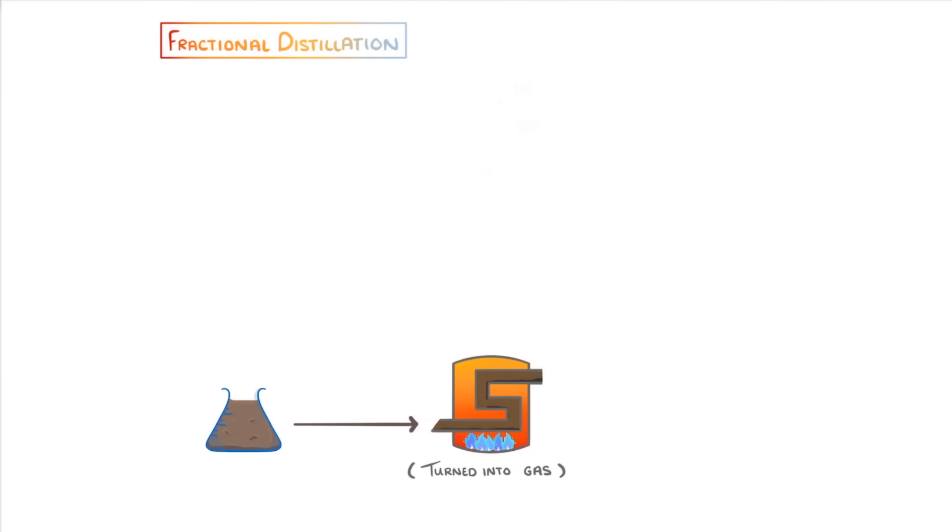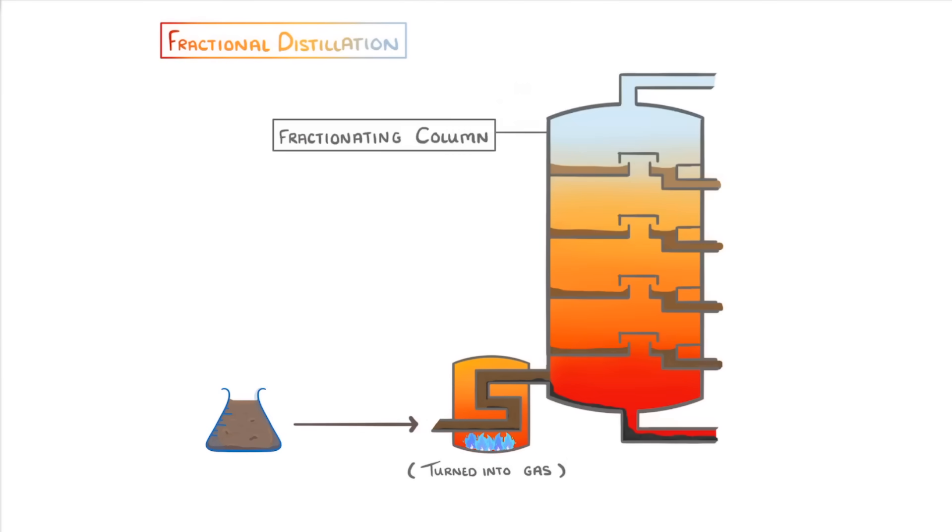We then pass this gaseous mixture into a fractionating column, which is really hot at the bottom but gets cooler towards the top. The idea is that these hot gases will then start to rise up the column. But importantly, as soon as they reach a region that has a lower temperature than their boiling point, they'll condense into a liquid.